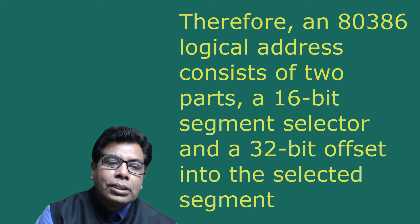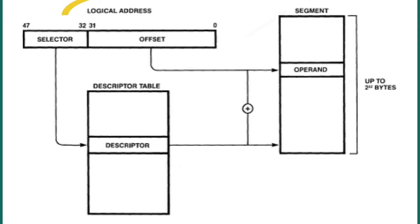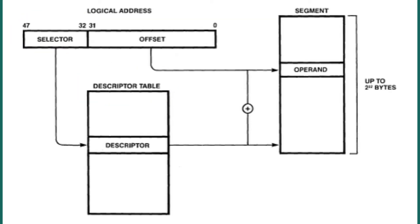Because a program may potentially refer to multiple segments, an 80386 logical address must identify a segment. Therefore, an 80386 logical address consists of two parts: a 16-bit segment selector and a 32-bit offset into the selected segment. As shown in the figure, we have the logical address, segment, and the descriptor table. The selector part of the logical address names the segment's descriptor. The processor determines the segment's address by using the selector as an index into the descriptor table maintained by the operating system. Then, adding the offset part of the logical address to the base address obtained from the segment's descriptor produces the operand address.